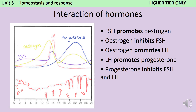Luteinising hormone promotes the production of progesterone. And then finally, as the progesterone is released from the empty follicle following ovulation, this inhibits both follicle-stimulating hormone and luteinising hormone, causing the cycle to come to an end.